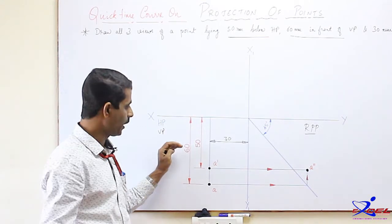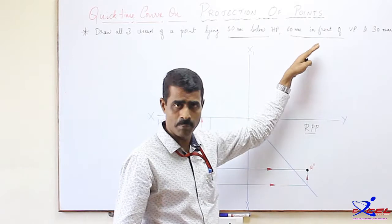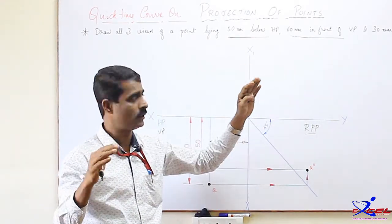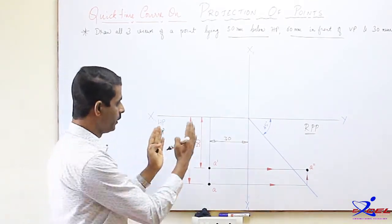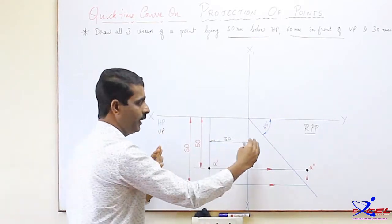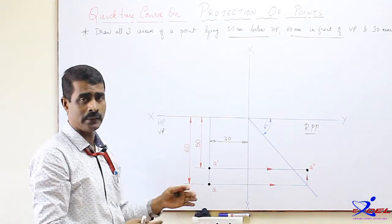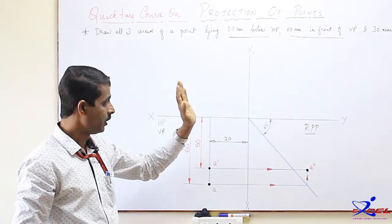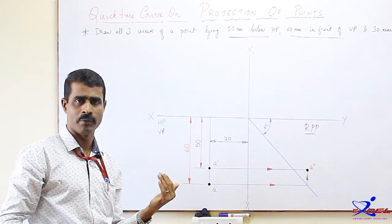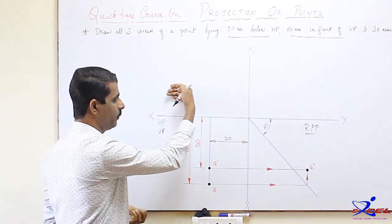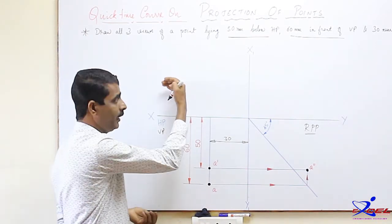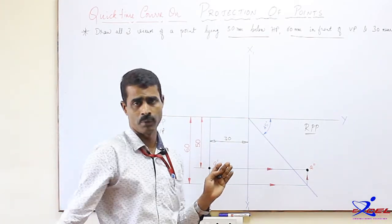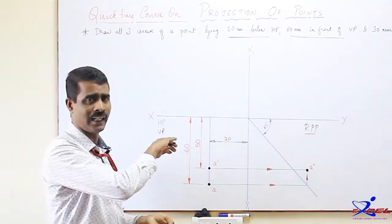For the second quadrant, the 45-degree line and the top-view rotation work similarly, but the views appear above. If the distance is given with respect to the left profile plane, the LPP comes on the right-hand side — a mirroring of the RPP setup. In the third quadrant — below HP and behind VP — the HP acts as the top view plane and VP as the front view plane, but in reverse position from the first quadrant. The top view is rotated about 45 degrees, and the side view comes adjacent to the VP or front view.